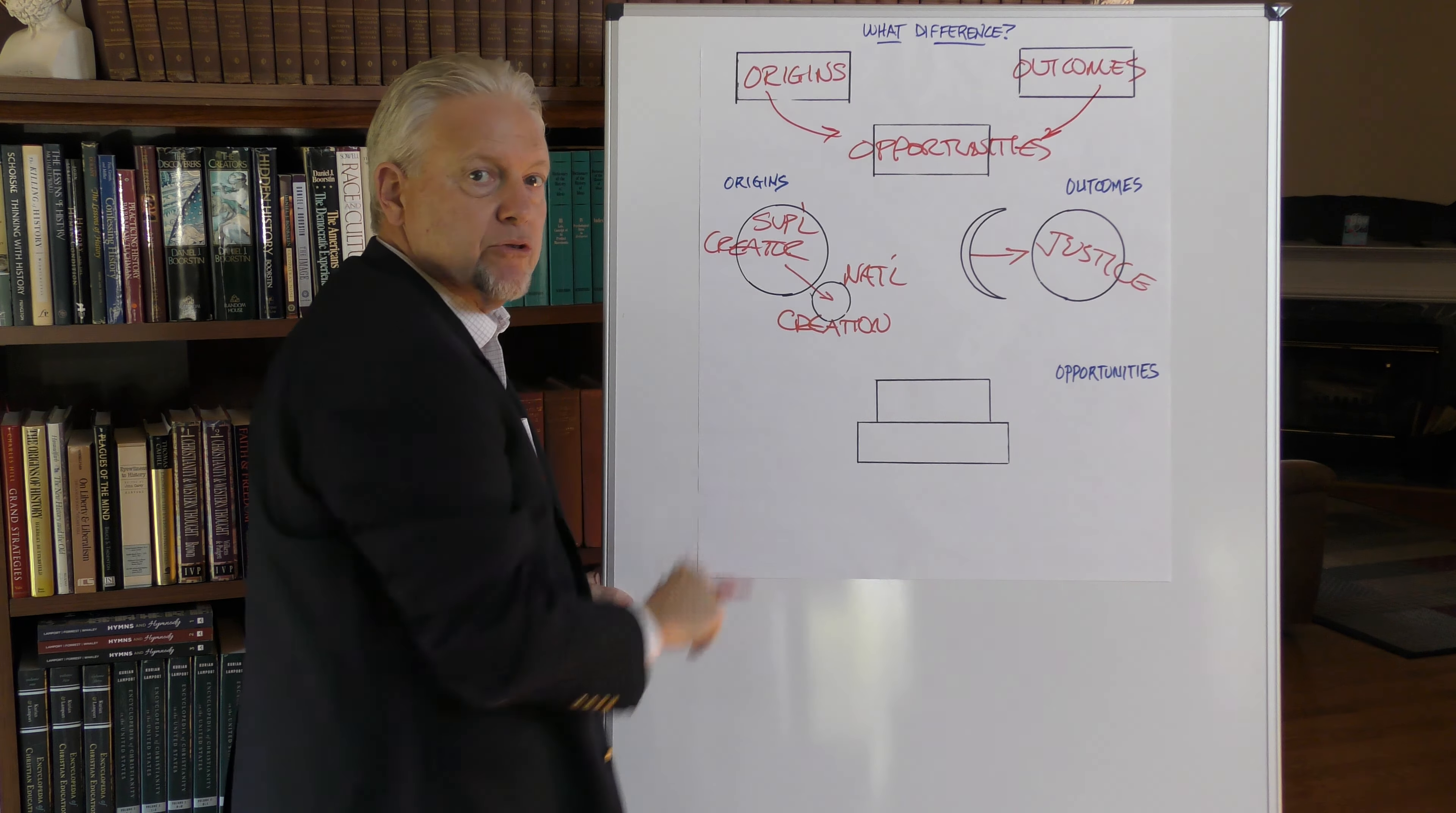If there is an eternal God, we know where we've come from. This eternal God is going to establish complete and perfect justice in the end—knowing where we're going. This helps us understand that there is a right and wrong, a standard for ethics—knowing how we ought to live now.